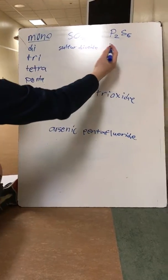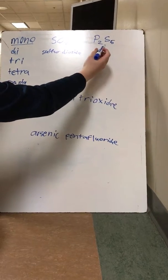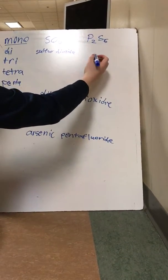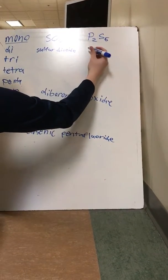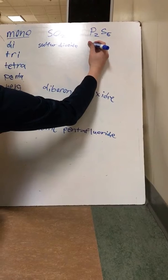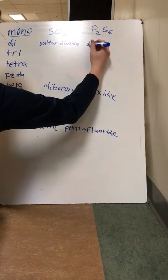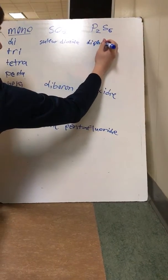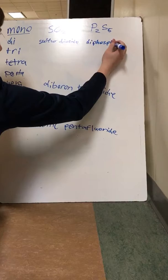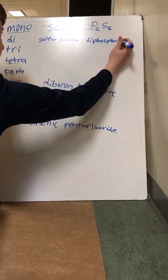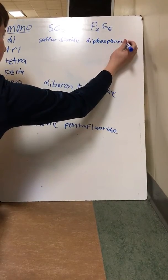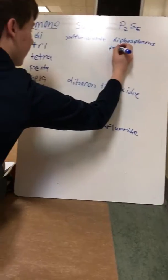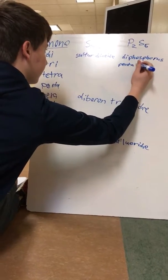This one has two phosphorus atoms and five sulfur atoms, so we would say diphosphorus pentasulfide.